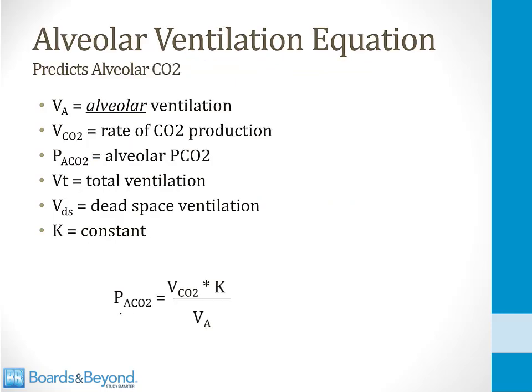The alveolar ventilation equation states that the partial pressure of CO2 in the alveoli equals the rate of CO2 production — VCO2 — times a constant K, divided by alveolar ventilation. If the body produces more CO2, that can potentially raise the alveolar CO2 concentration. On the other hand, if you increase alveolar ventilation, that lowers the CO2 concentration in the alveoli, because ventilating more blows off more CO2 and lowers the alveolar PaCO2.